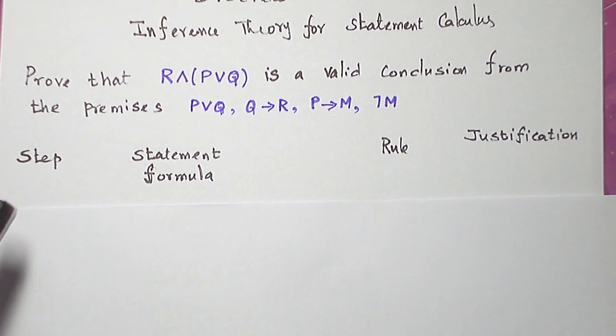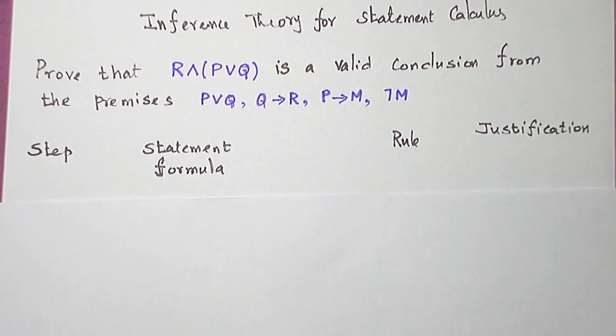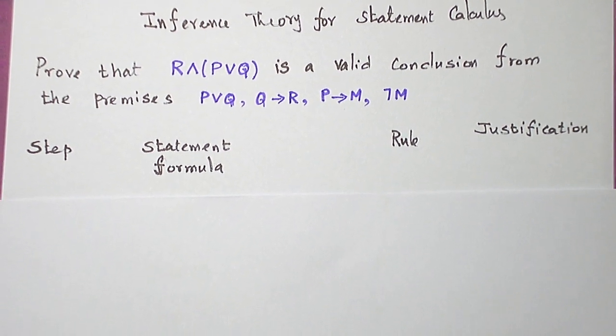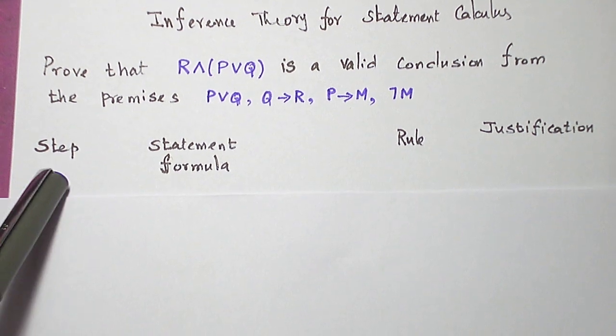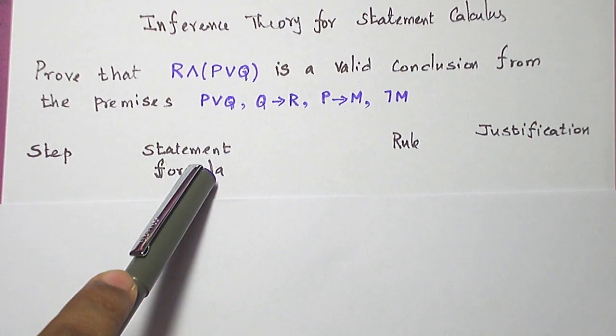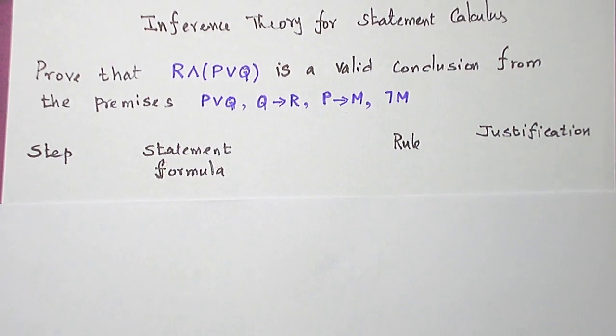For the proof, let me split the table into four columns: Step, Statement Formula, Rule, and Justification.